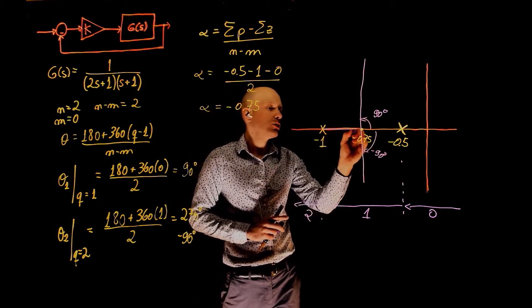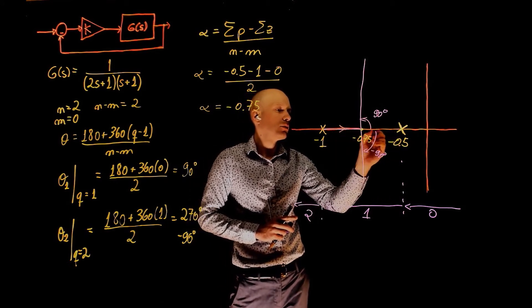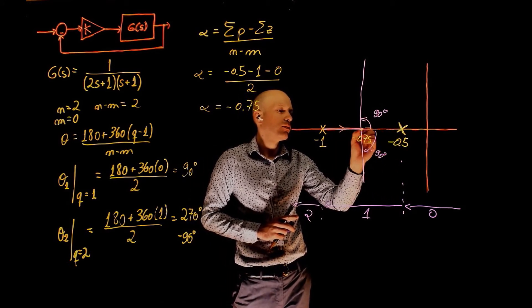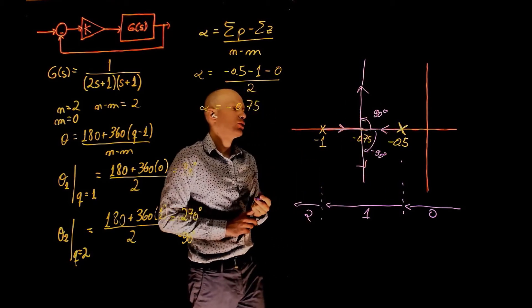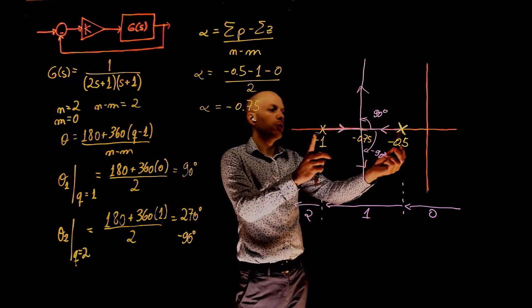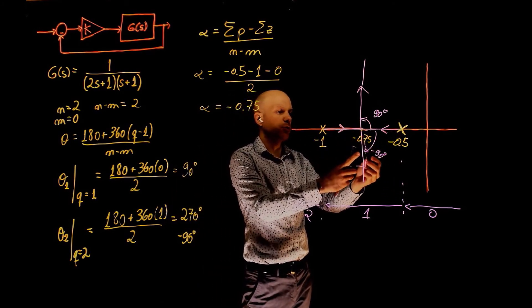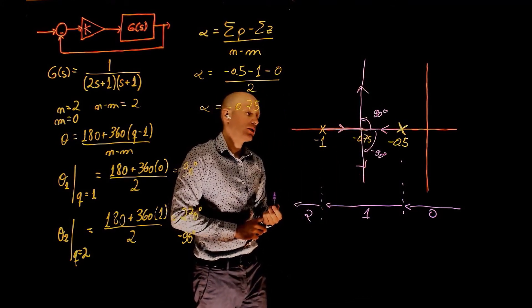And here is the other one at negative 90 degrees or at 270 degrees, that is the same. And now these two poles will go there to this breakaway point and then tend to infinity. So here we have the completed root locus for this control system. The poles will come together at 0.75 and then become imaginary and go to plus minus infinity.